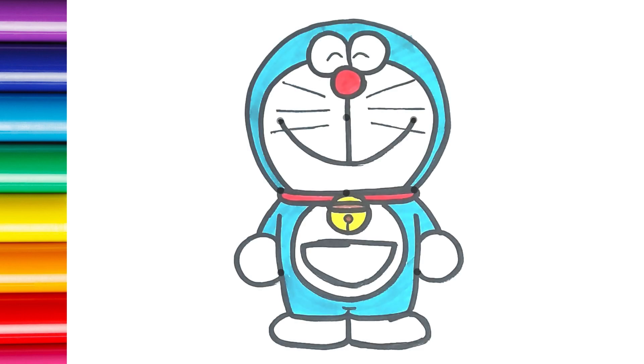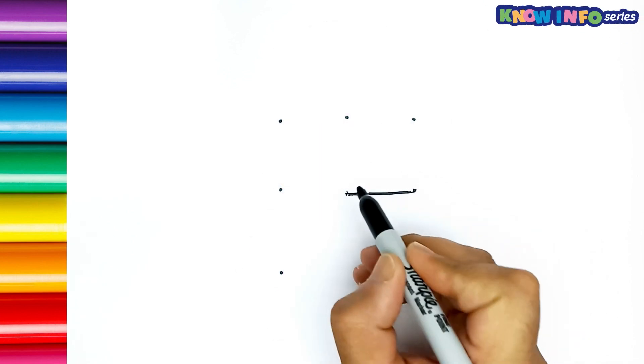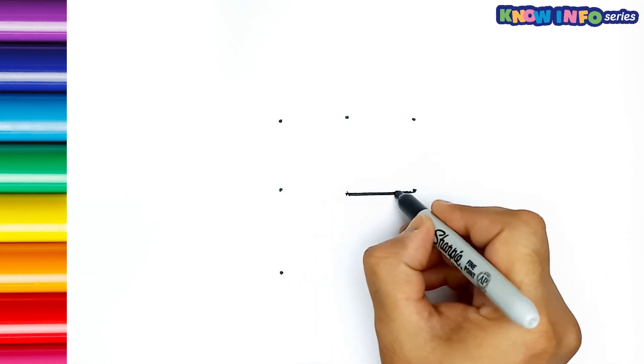Hello, kids. Today, we learned a very simple drawing of Doraemon using dots. Draw Doraemon's collar and pendant by joining the center points horizontally.